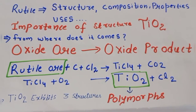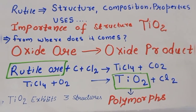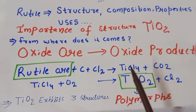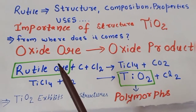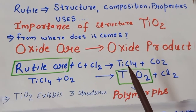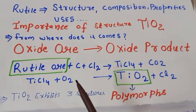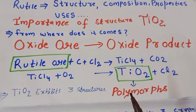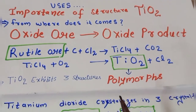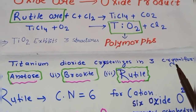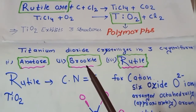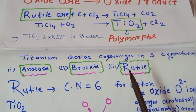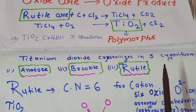An important question is: from where does TiO₂ come? It comes from an oxide ore. The rutile ore is treated with carbon and chlorine to get TiCl₄ and CO₂. This TiCl₄ is then oxidized to finally get titanium dioxide. TiO₂ exists in three crystalline forms — called polymorphs — which are anatase, brookite, and rutile. The most economically important is rutile.